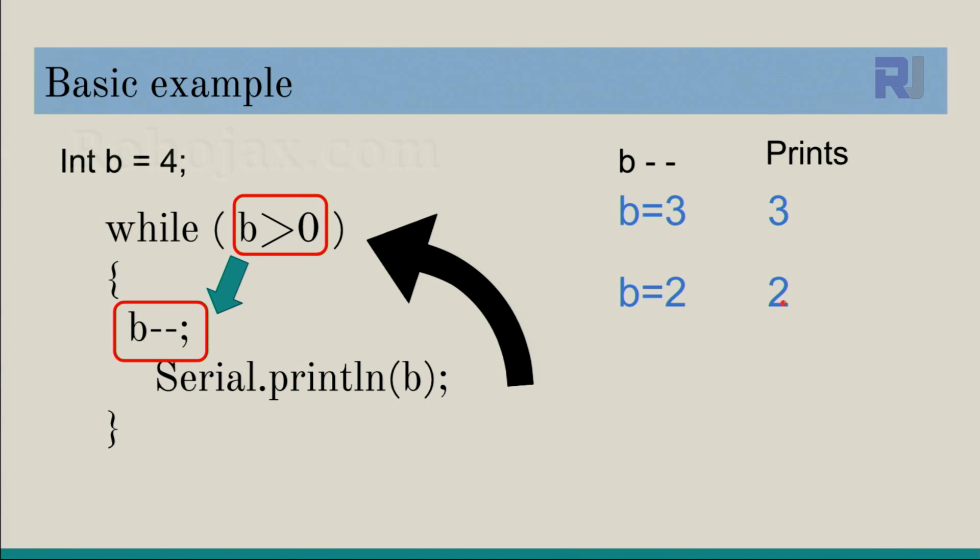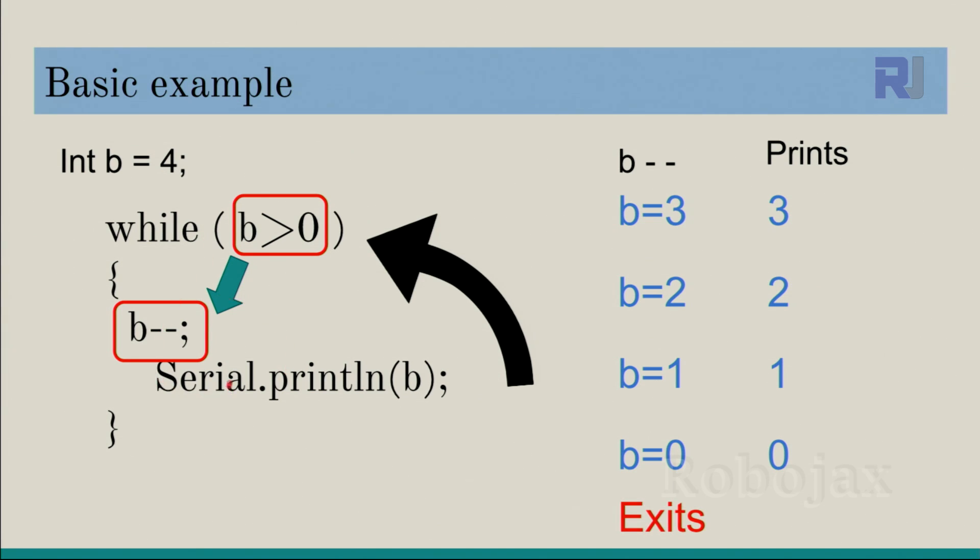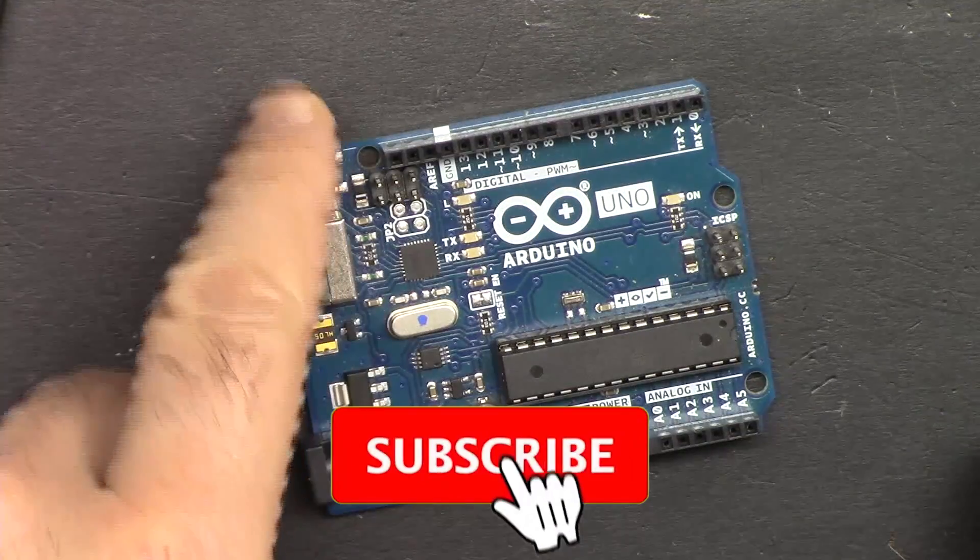It goes back here, compares, now is true. Come back here, subtract one from two, so it becomes one, and then print. This line will print it. After this we go again and compare. Is one bigger than zero? True. Come here, decrement it, it becomes zero, and then print b. Now after this, again compares. Is zero bigger than zero? False, and this cannot happen. Nothing will be executed and the while loop exits. The while loop stays here as long as the condition between the two parentheses is true. If you found this tutorial helpful, please thumb up and click subscribe.